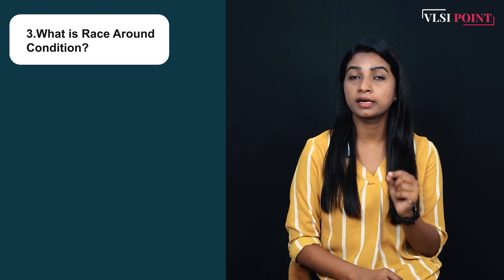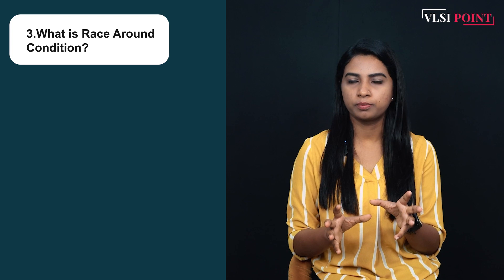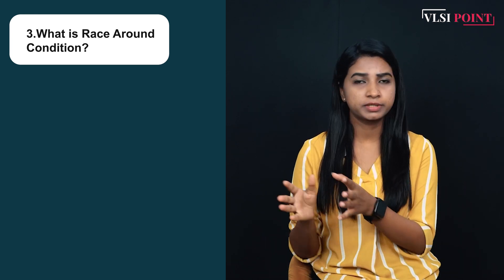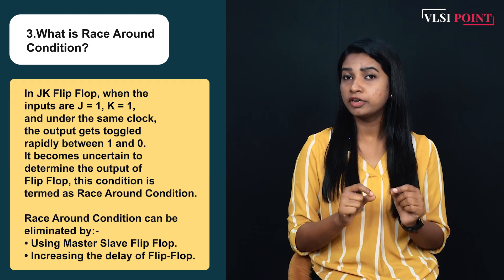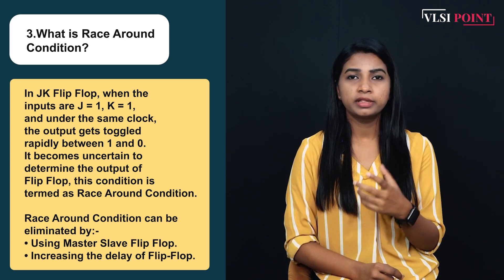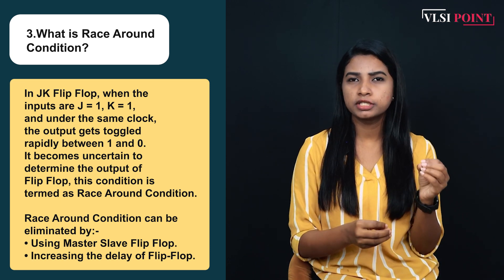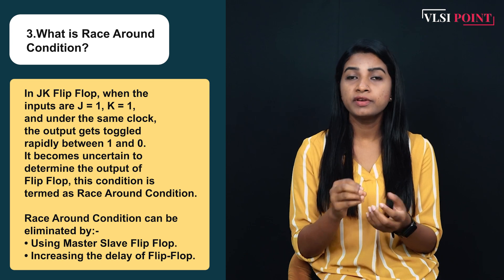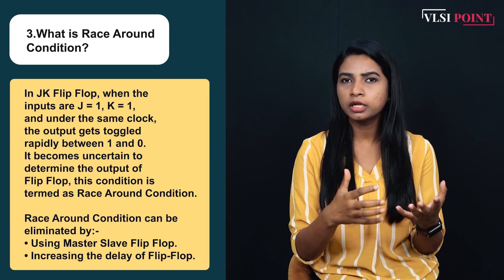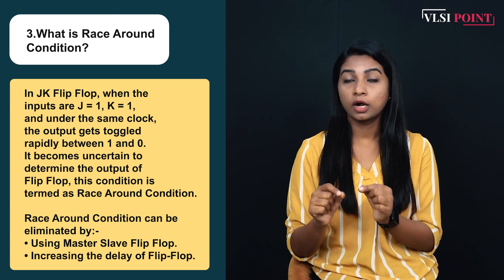Now we can move to the third question. The third question is: what is race around condition? So in your digital circuit, you have learned about flip flops. Four types of flip flops are there: SR flip flops, JK flip flops, D flip flops, and T flip flops. So in JK flip flops, whenever we give J=1, K=1 input, the flip flop starts toggling — it just rapidly changes between 0 and 1. That's why we call this state the race around condition, because there is a race between 0 and 1. You cannot determine whether the output is 0 or 1.